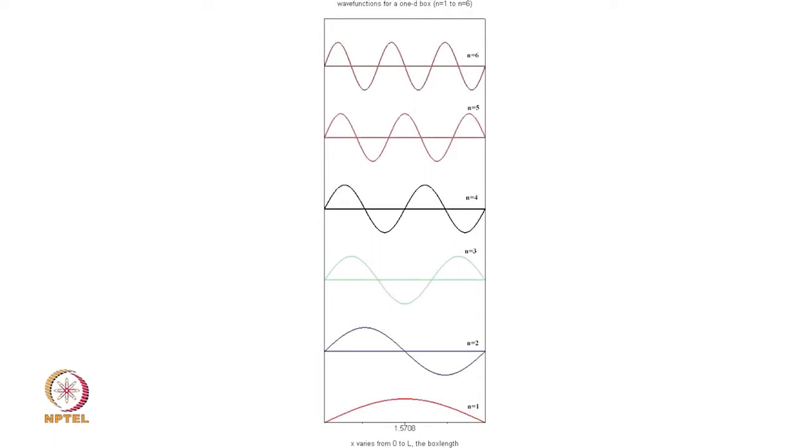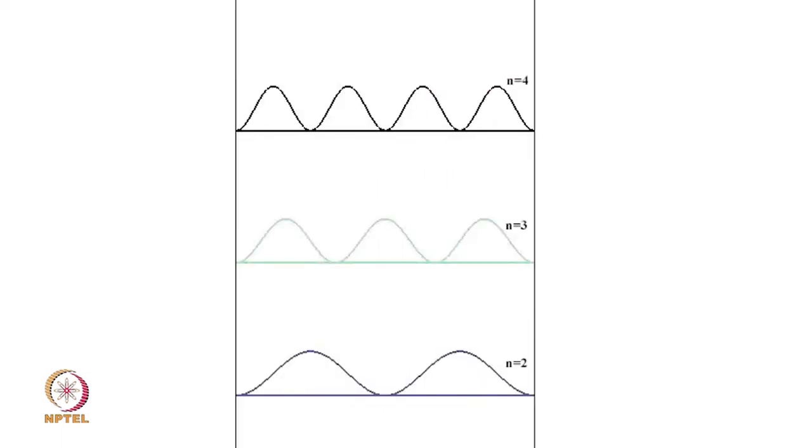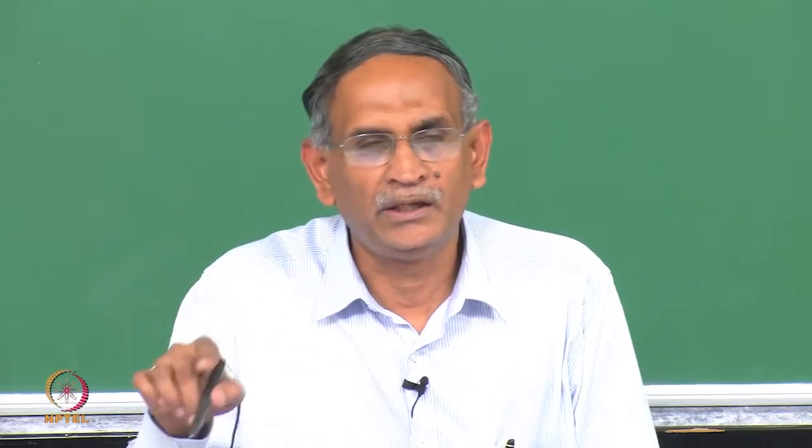Therefore, if you take the square of this wave obviously, the picture that you get is the picture that I showed you now. So, this is the square of the n equal to 2 wave and this is the square of the n equal to 3, sine 3πx/L.